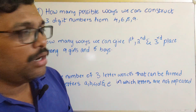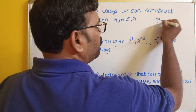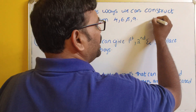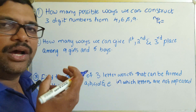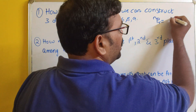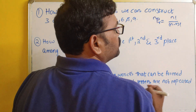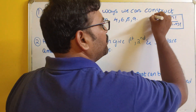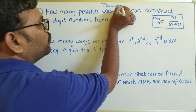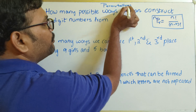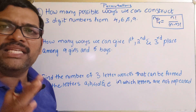Just a quick recall of the formula. For permutations, the formula is nPr. If we want to select and arrange r objects from n objects, it is n factorial divided by (n minus r) factorial. This is the formula for permutations. We will start with permutations without repetition — very simple and basic problems.